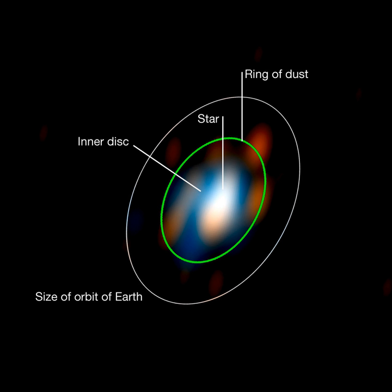For the unit telescopes, this gives an equivalent mirror diameter of up to 130 meters, and when combining the auxiliary telescopes, equivalent mirror diameters of up to 200 meters can be achieved. This is up to 25 times better than the resolution of a single VLT unit telescope. The VLTI gives astronomers the ability to study celestial objects in unprecedented detail. It is possible to see details on the surfaces of stars and even to study the environment close to a black hole. With a spatial resolution of 4 ms, the VLTI has allowed astronomers to obtain one of the sharpest images ever of a star.